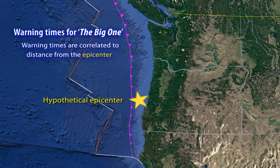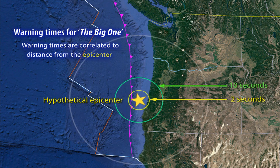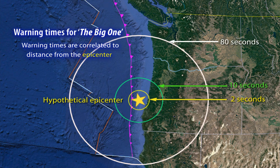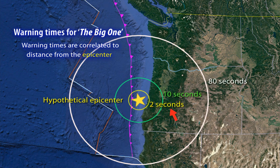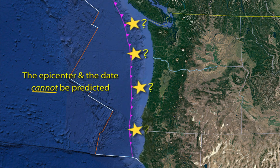Computer simulations teach us that for large offshore megathrust quakes, ShakeAlert can provide up to tens of seconds of warning to residents of inland areas such as Puget Sound and Willamette Lowlands. But if you are close to where the earthquake starts — and it might start near the coast — you will only get a few seconds before strong shaking arrives. Remember, the earthquake can start anywhere along the subduction zone, so it's important to be prepared for a short alert time, or even none at all.